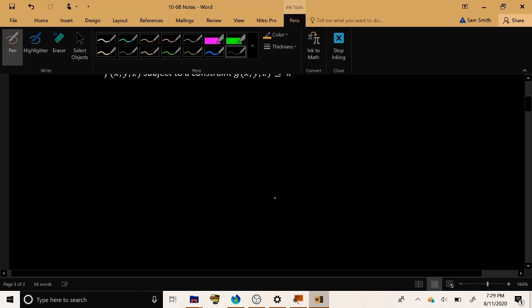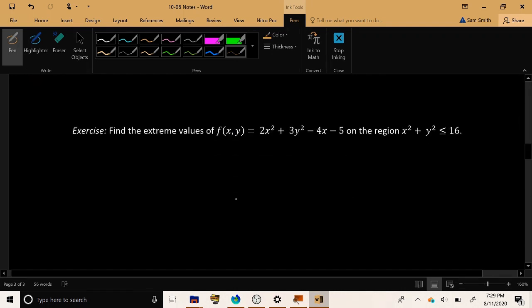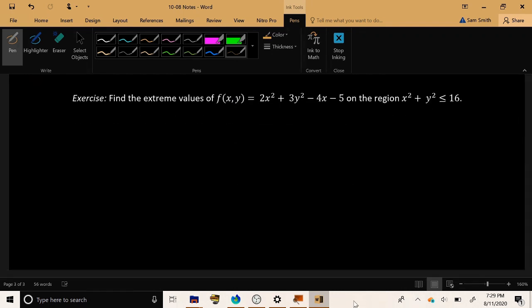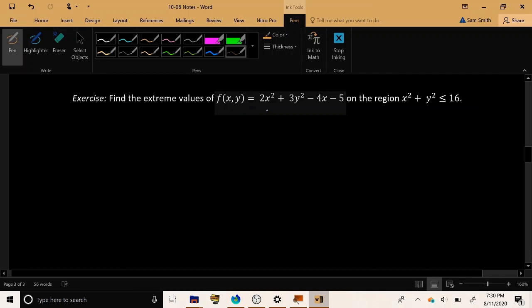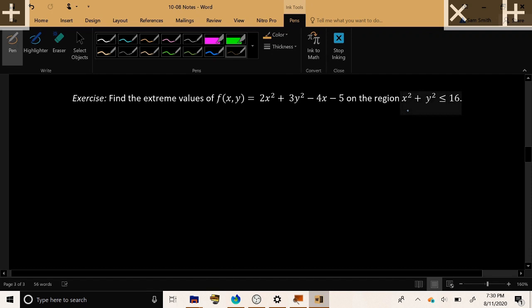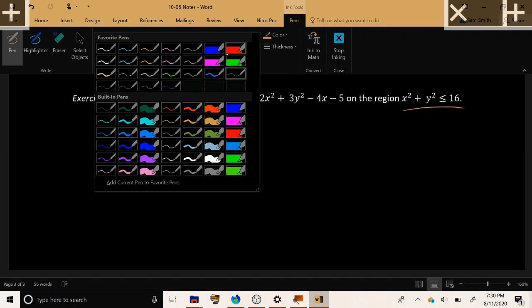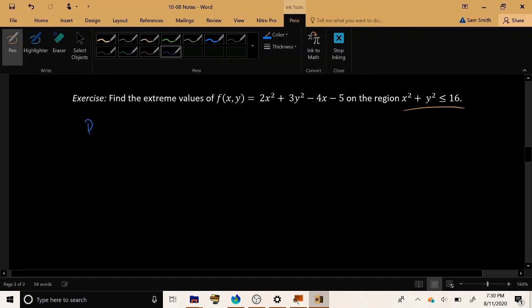We will have a single example, which hopefully will not take too long, but we do have two pages set up for us to fill in. Hopefully two pages will be enough, but if not we'll just add some more. Let's find the extreme values of f of xy equals 2x squared plus 3y squared minus 4x minus 5 on the region x squared plus y squared less than or equal to 16. Now, when you are given a constraint inequality, we approach the problem in two parts.